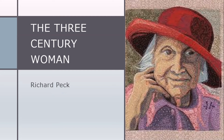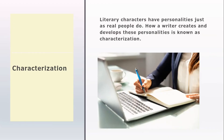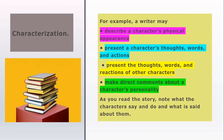Characterization. Literary characters have personalities just as real people do. How a writer creates and develops these personalities is known as characterization. For example, a writer may describe a character's physical appearance, present a character's thoughts, words, and actions, present the thoughts, words, and reactions of other characters, or make direct comments about a character's personality. As you read the story, note what the characters say and do and what is said about them.